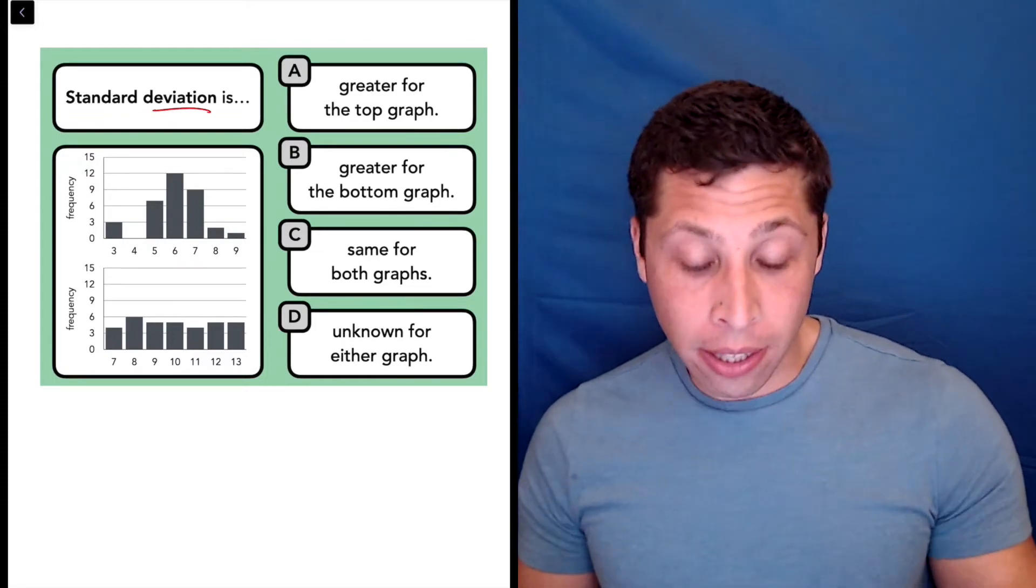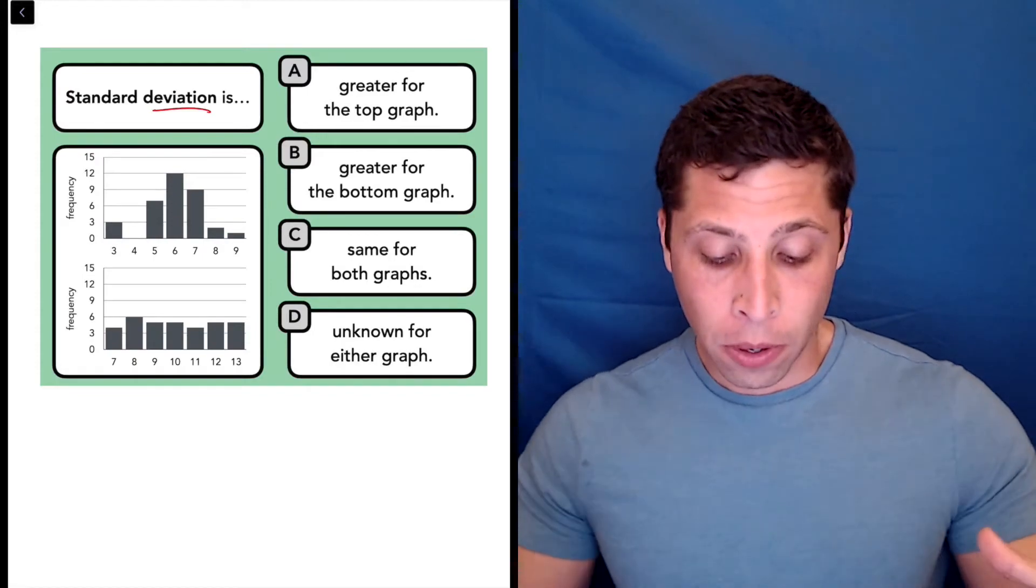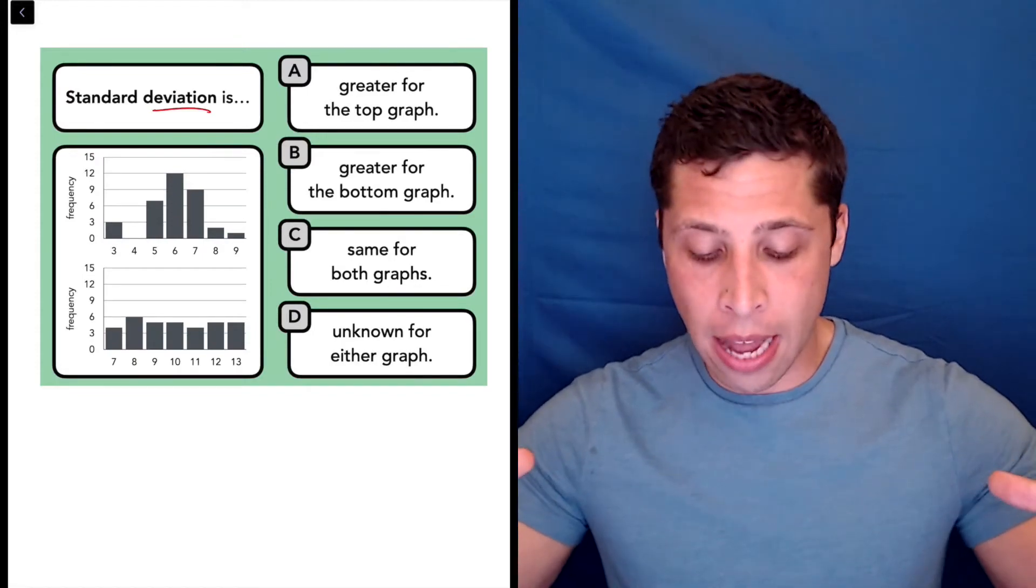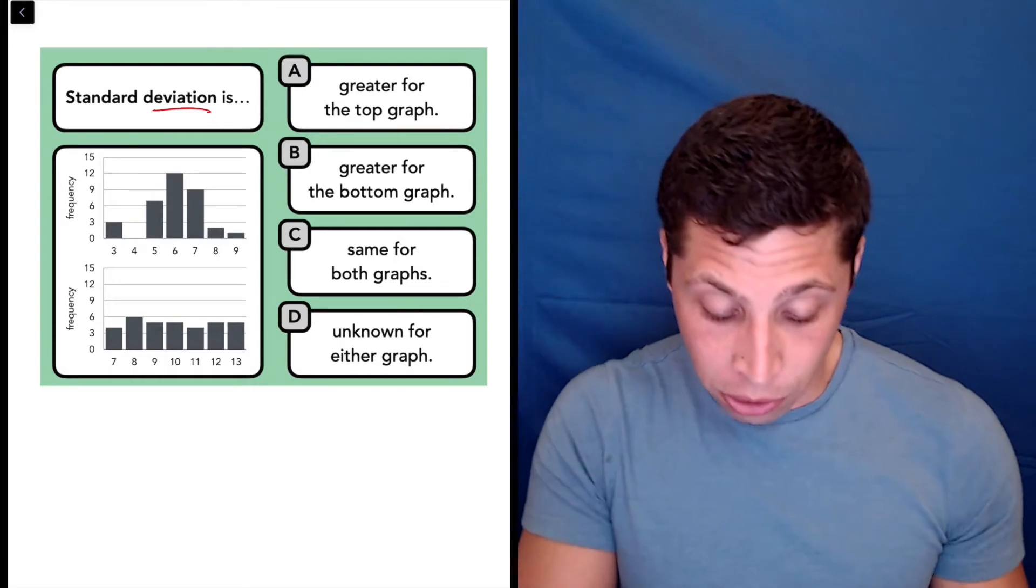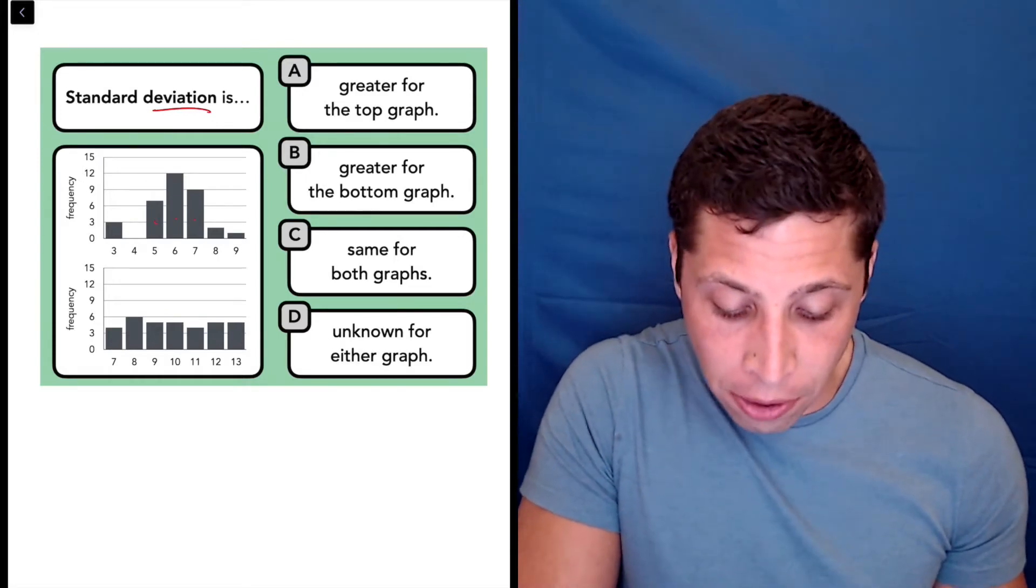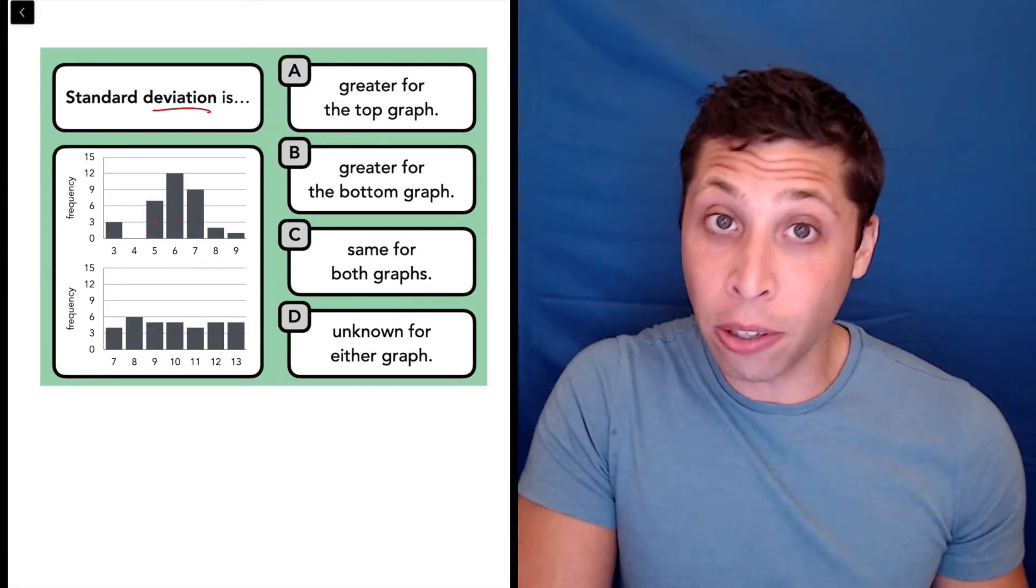So if we look at the top graph here, you can see that what this frequency chart is telling us is that most of the values are either five, six, or seven. They're very close to that middle six.